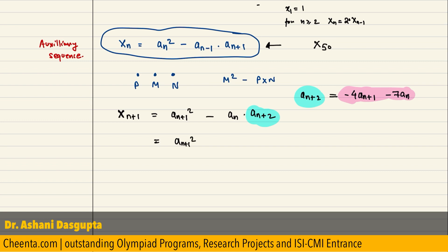So, let us do that a(n+1) square minus an times minus 4 a(n+1) minus 7 an which is equal to a(n+1) square minus, well, actually, I will open the bracket. So, 4 an times a(n+1) plus 7 an square.